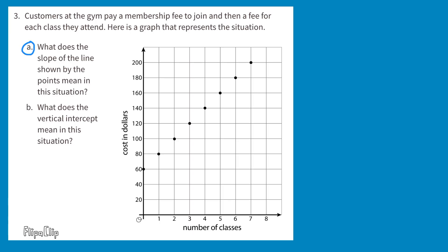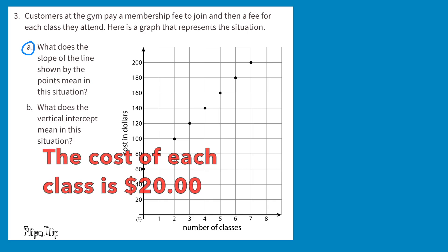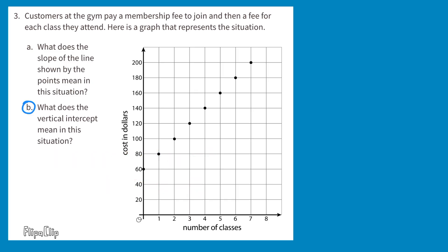Part A: The horizontal axis is the number of classes and the vertical axis is cost in dollars. The slope of the line means that the cost for each class is $20. Part B: The y-intercept represents the membership fee in this situation.